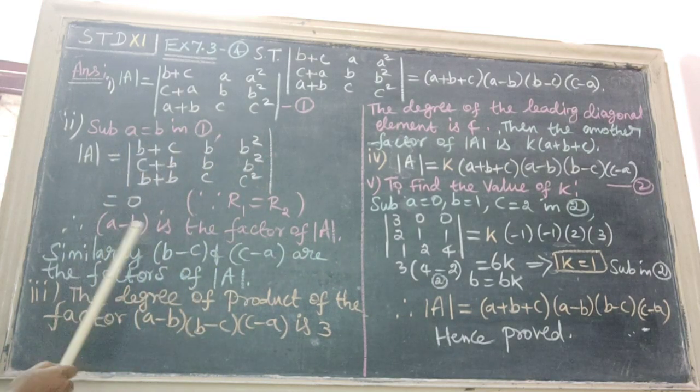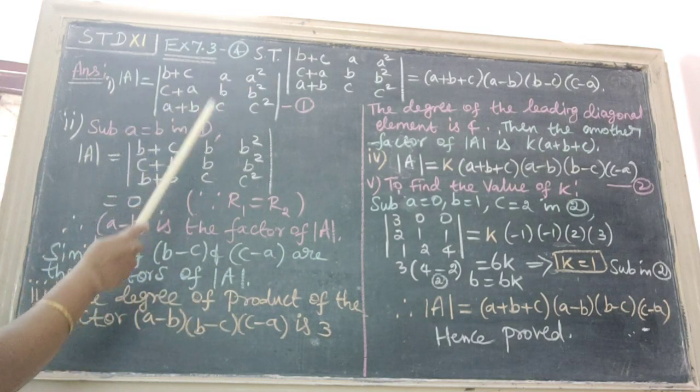There are four, five steps. First step one, determinant A, that is equation number one.